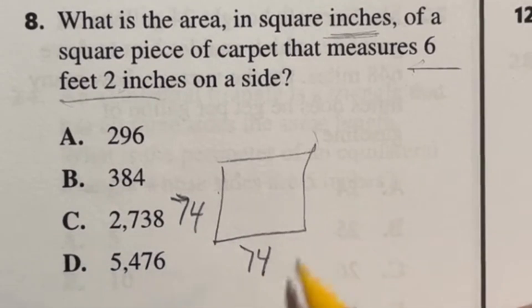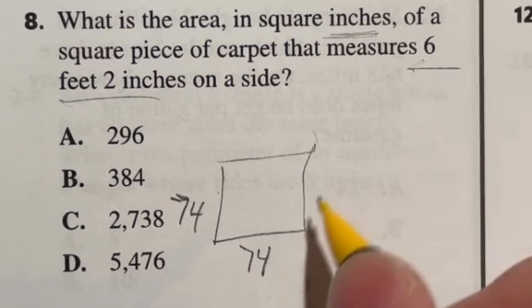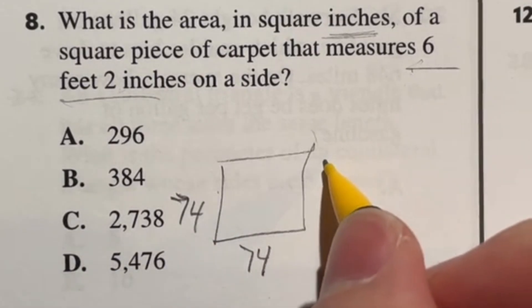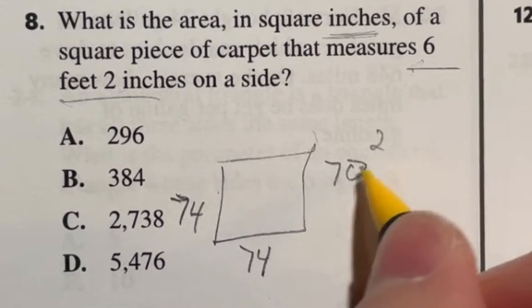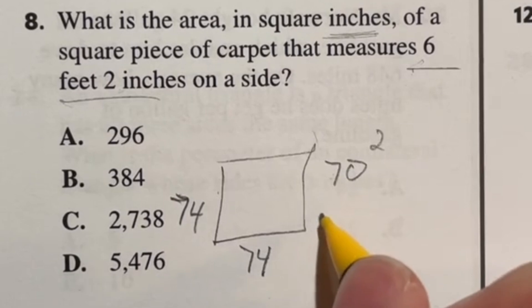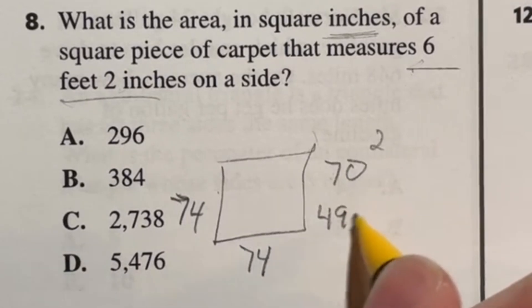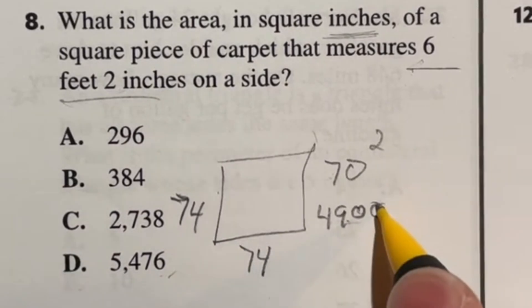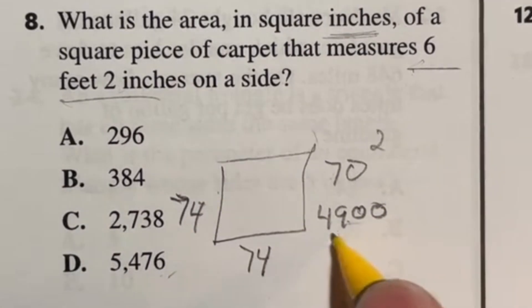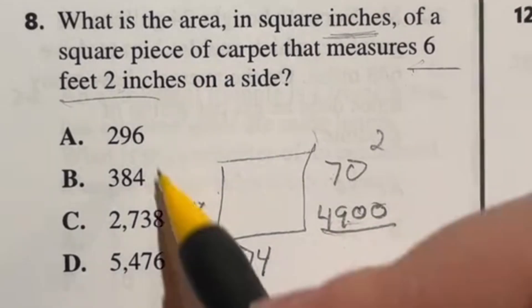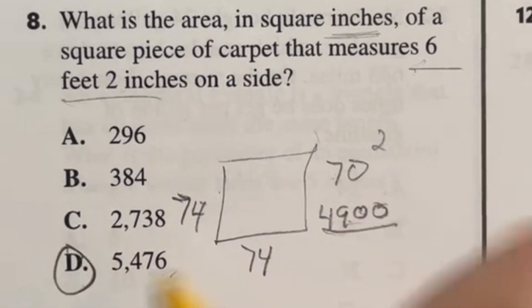Remember, you don't get a calculator for this test. So a lot of times you want to find quick ways to do this. If you can multiply 74 by 74 extremely quick in your head, great, do it. But what I would probably know right off the bat is that 70 squared just means I'm doing seven times seven to give me 49 with the two zeros after. And I already know there's only one answer bigger than that. So 74 squared is going to be bigger than this, meaning there's only one possible answer here. And that would be D.